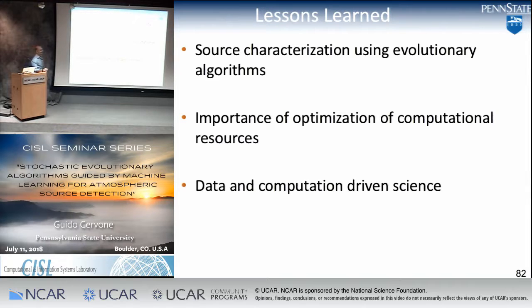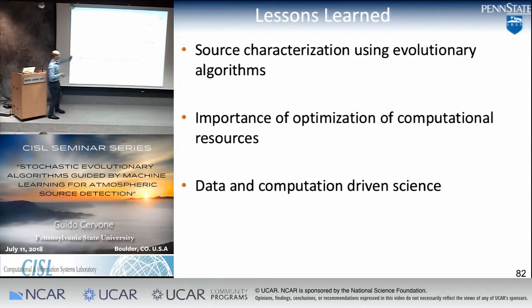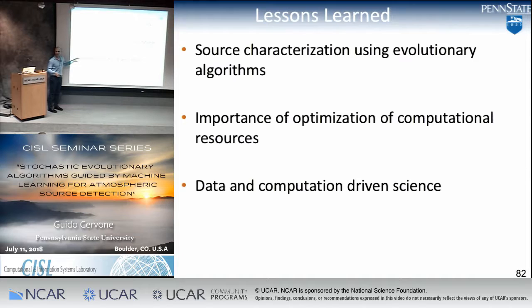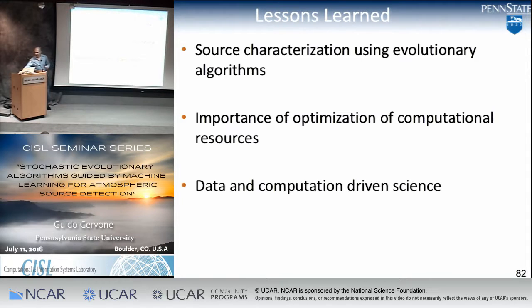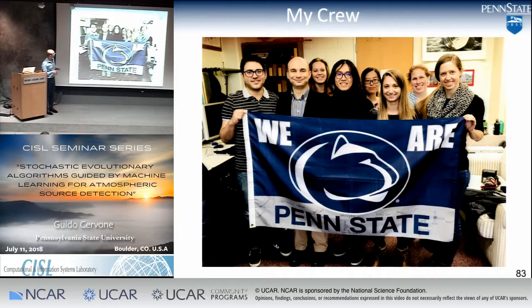So I'm done. Lessons learned: we talked about source characterization using evolutionary algorithms, extended into the non-Darwinian domain for hard problems where computation is much more complex. It's very important to optimize computational resources, and this non-Darwinian methodology can actually help reduce the number of computations. I hope I've convinced you that this is important — especially if you come from a physics background and are driven by first principles, this is a completely different way of thinking: we start from the data rather than from the principles. I want to acknowledge my postdocs and students who worked on several of these problems. Thank you.